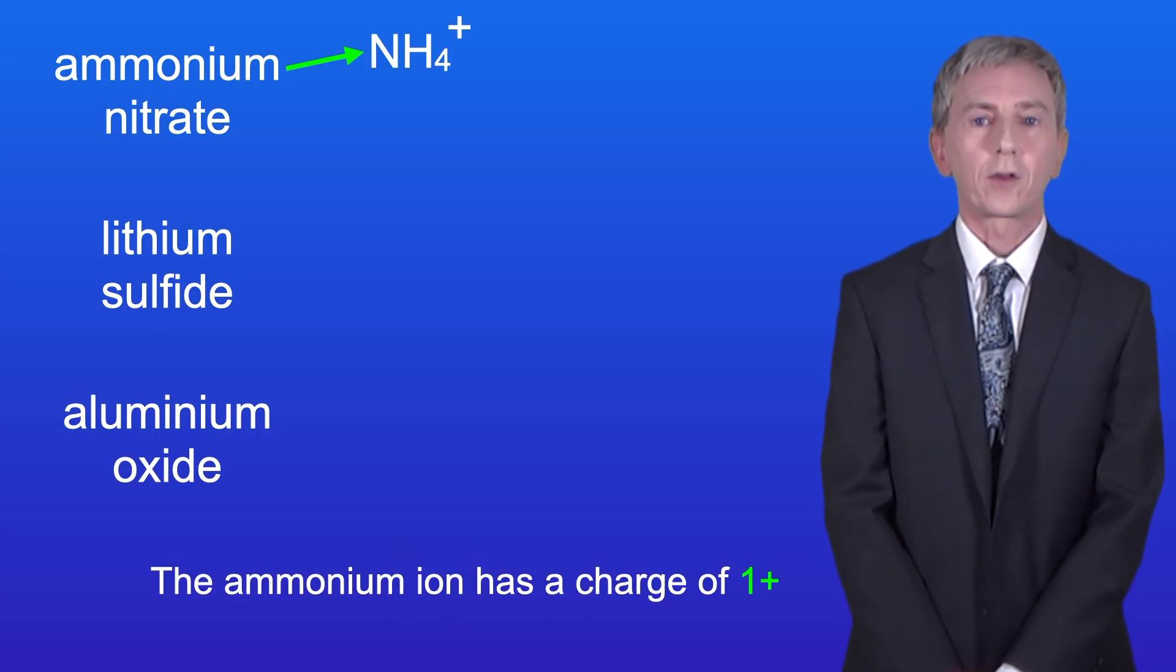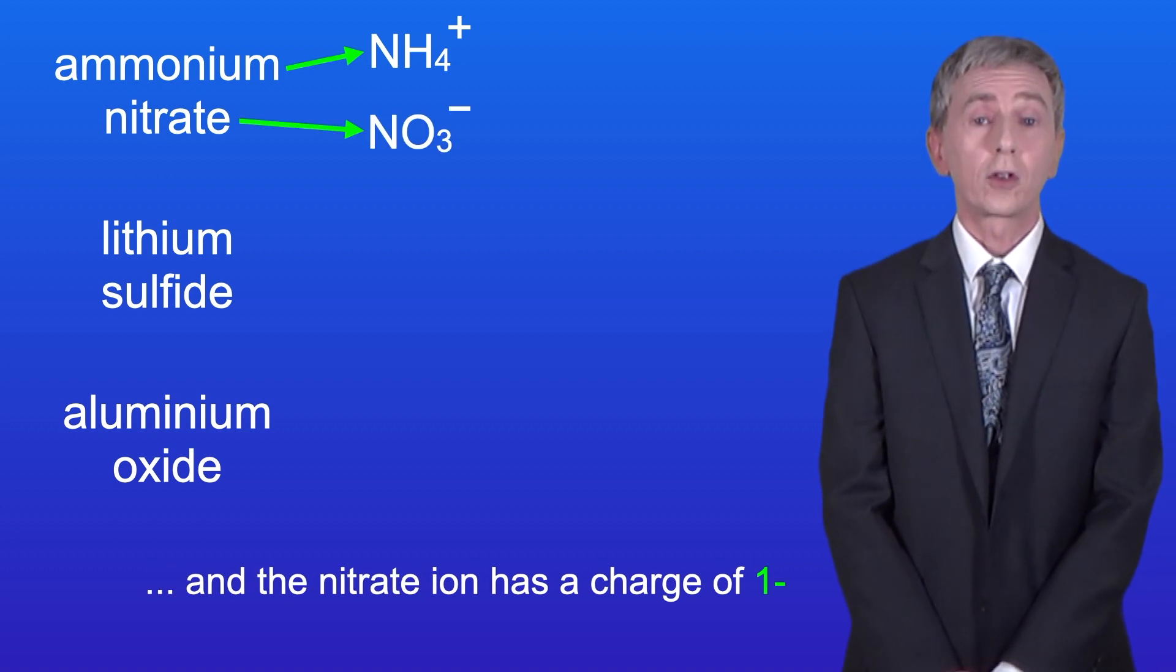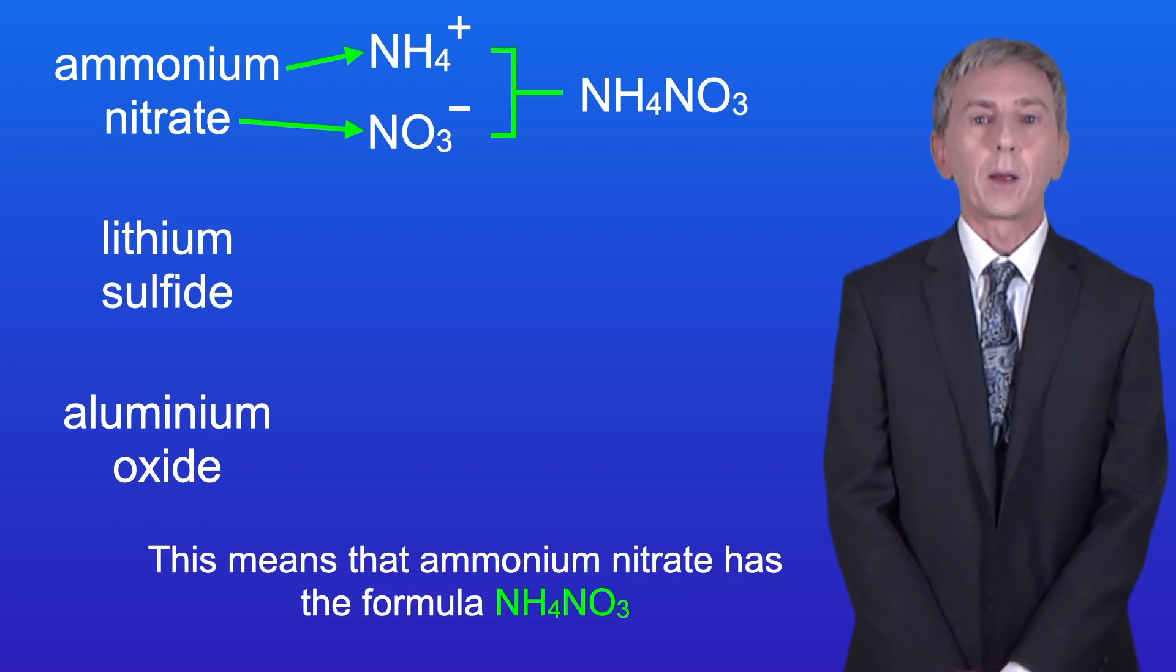Okay, the ammonium ion has a charge of 1+ and the nitrate ion has a charge of 1-. This means that ammonium nitrate has the formula NH4NO3.